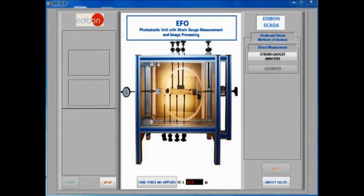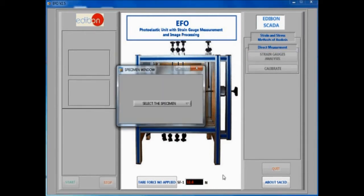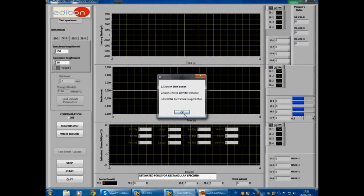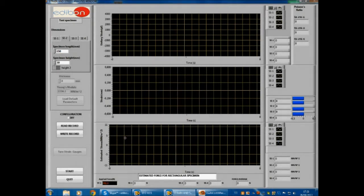Now we will run a simple strain gauge experiment to display the functionality of the unit using its computer controlled user interface. The software starts with the main screen that displays a picture of the unit. To start, select the strain gauge analysis button, then choose the specimen type. We are using a rectangular specimen. The software takes you to the computer control user interface and instructs you on how to prepare the specimen for measurement. Click OK and then click the start button.